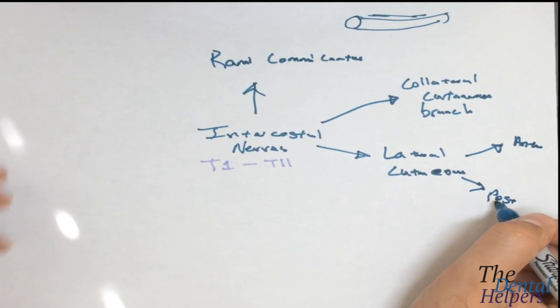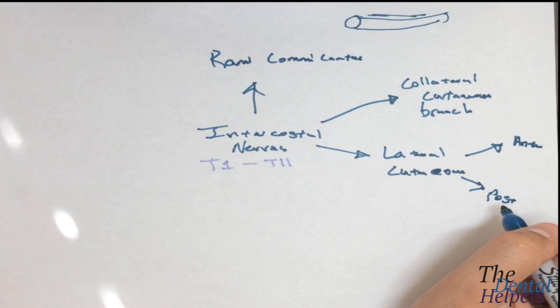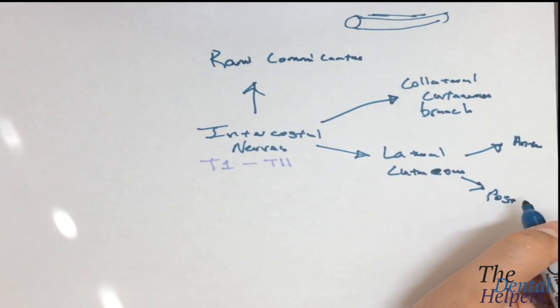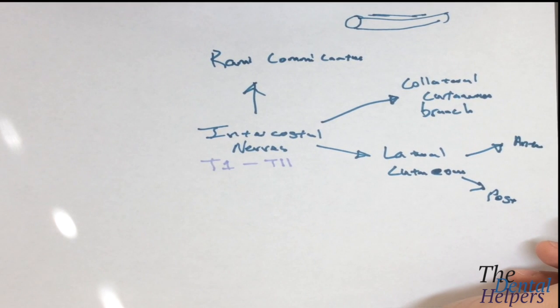The anterior cutaneous branch is the terminal portion of the intercostal nerves. It innervates the skin around the midline of the chest by dividing into medial and lateral branches. The posterior does something similar.